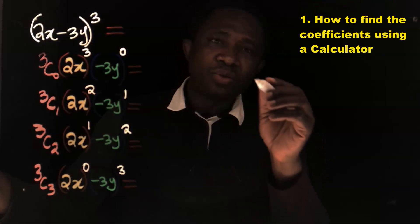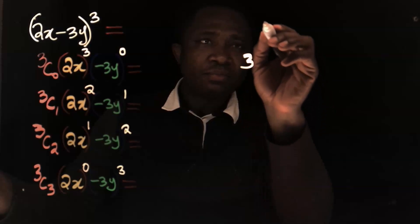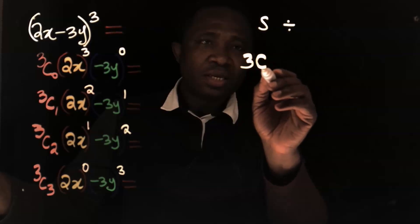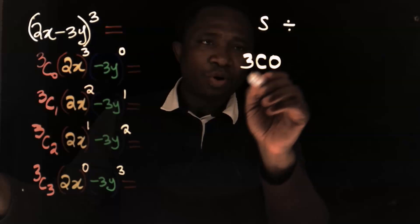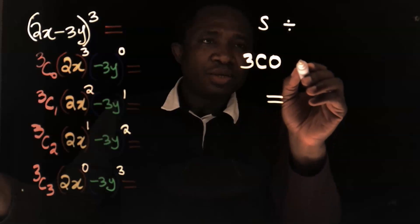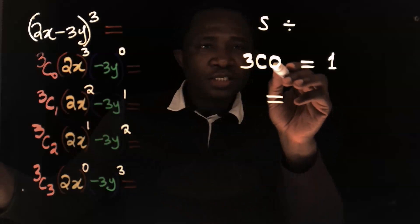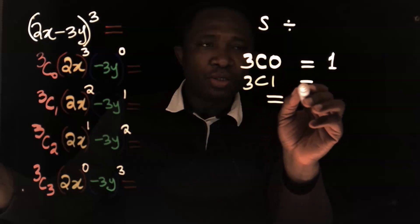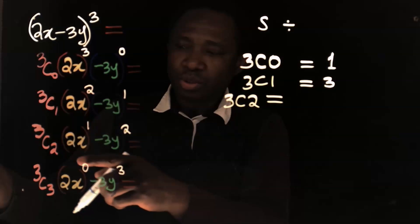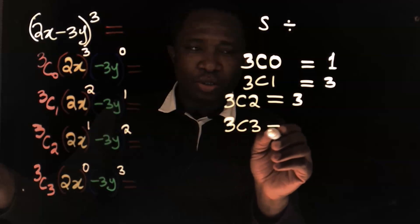If you are going to use your calculator, for 3C0 you type 3, then press Shift and Divide — that is the second function of Divide — and C will appear on your calculator. Then type 0 and press the equal sign; your answer will be 1. For 3C1 you get 3. For 3C2 you also get 3. And for 3C3 you get 1.